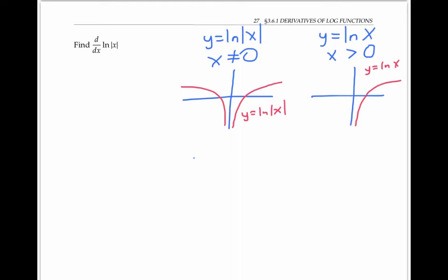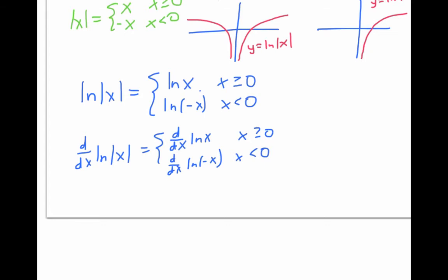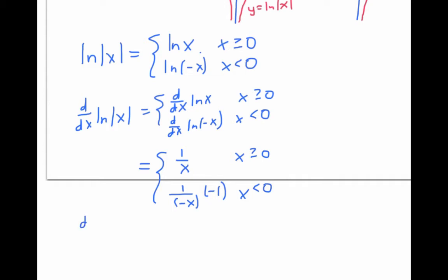The graphs are also related. When you look at the graph of y equals ln|x|, it looks like you're seeing double. Since |x| equals x when x is greater than or equal to zero, and negative x when x is less than zero, ln|x| equals ln x for positive x, and ln(−x) for negative x. Taking the derivative of each piece: the derivative of ln x is 1/x, and the derivative of ln(−x) is one over (−x) times (−1) by the chain rule, which also simplifies to 1/x. So the derivative of ln|x| equals 1/x whether x is positive or negative.